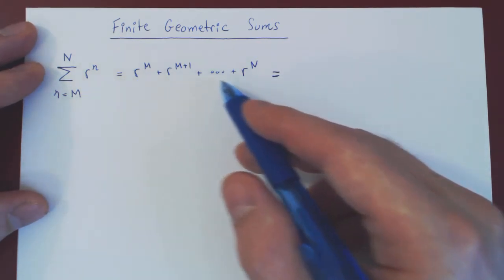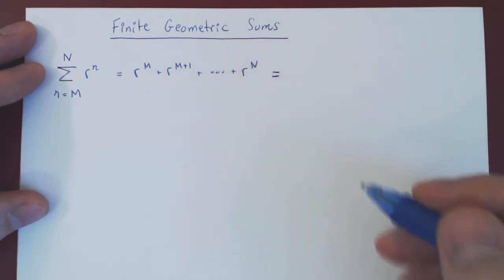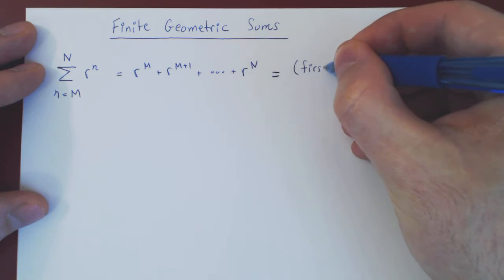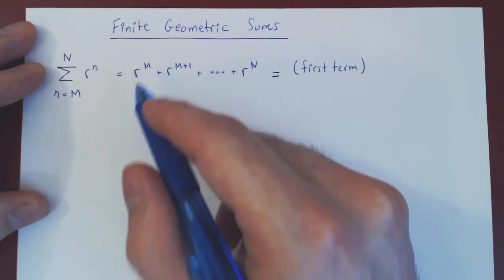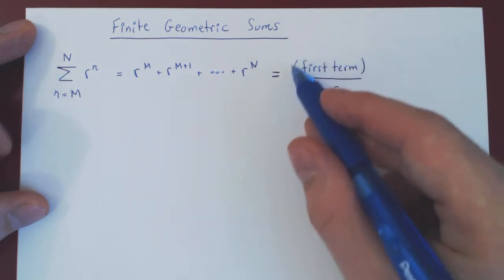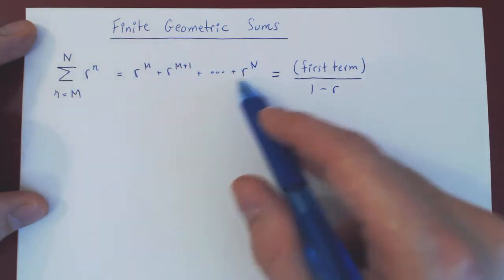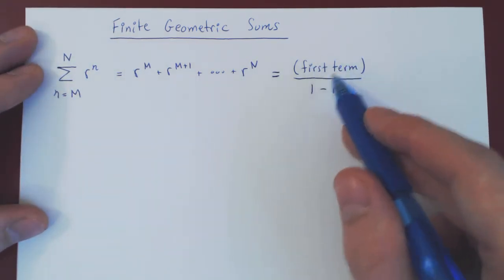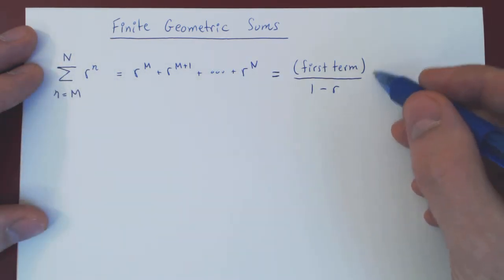So here we'll be assuming that r is not equal to 1, and the first part of the formula is the same as for an infinite geometric series. So the first part of our numerator is the first term of the sum, so this would be r to the m, over 1 minus r. This is exactly what you would get if the sum would go up to infinity. In the case of an infinite geometric series, if it does converge, if r is strictly less than 1 in absolute value, the series adds up to the first term over 1 minus r. But now we have a finite sum.